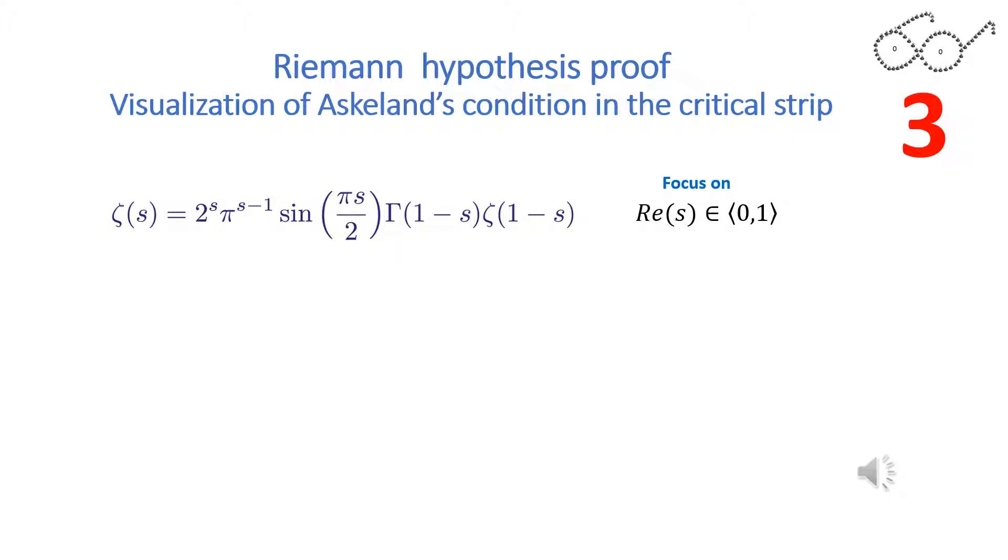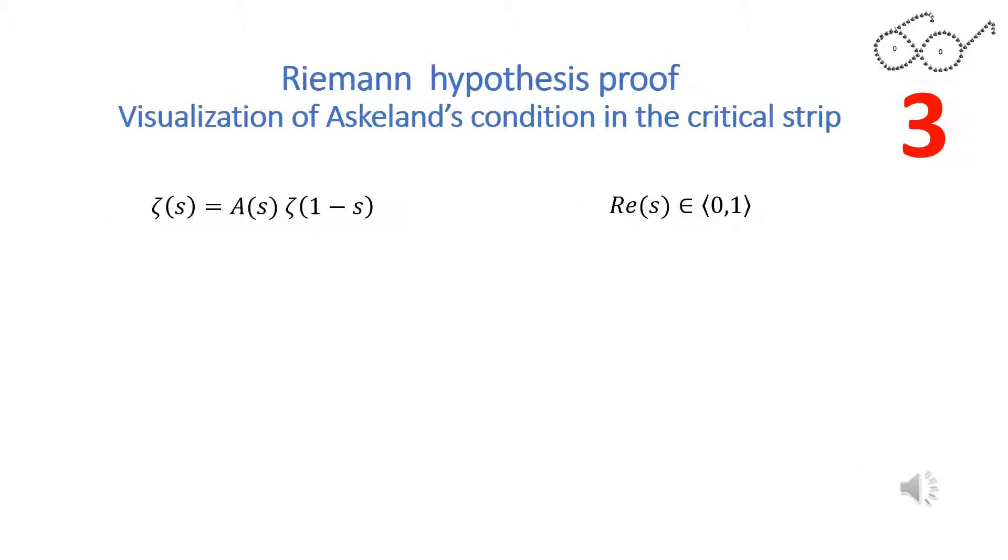I simplify the expression in front of zeta 1 minus s. I call that part A of s. Then I get the simplified version.